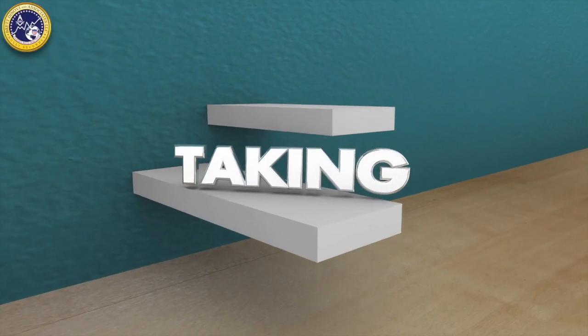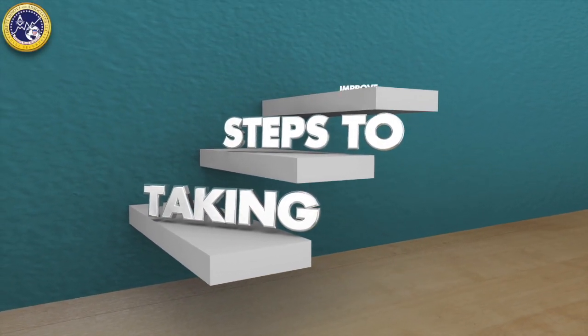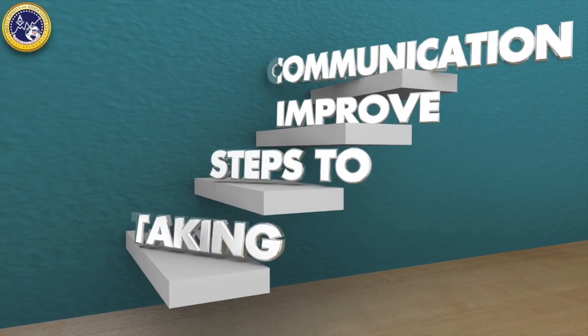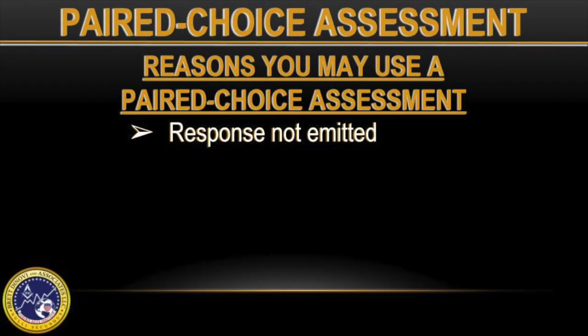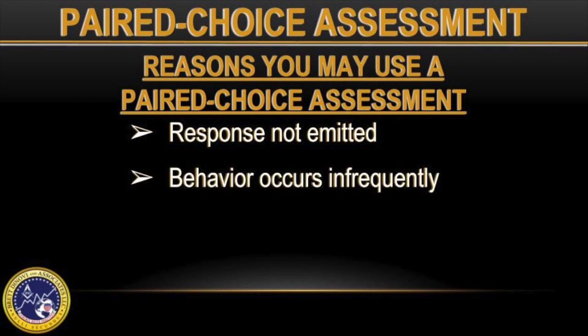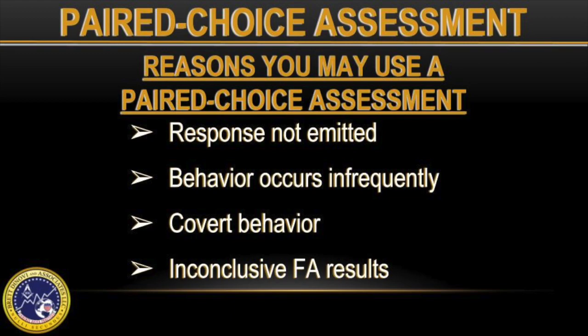If you know why the problem behavior is occurring, you can tailor your replacement behaviors via communication or an alternative response. Some reasons that you may choose to conduct a paired choice assessment is if the individual does not display the problem behavior during the functional analysis, behavior occurs infrequently or at low levels and does not repeat in subsequent conditions, or if the behavior is covert. Inconclusive results lead practitioners to rely on descriptive assessments and other indirect techniques, and the behavior plan does not include function-based interventions.